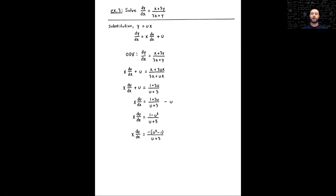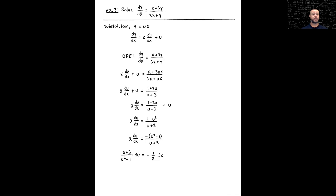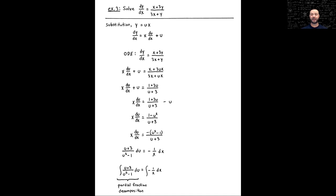We've simplified, and now we can attempt to separate this ODE. We'll separate this to: (u plus 3) divided by (u squared minus 1) times du equals negative 1 over x times dx. Most of the work so far has been algebraic. To complete this, integrating both sides — the integral on the left side comes down to a partial fraction decomposition. That's where most of the recommended 10 minutes for this question probably occur — some time for the algebra, most of the time for the partial fraction decomposition.